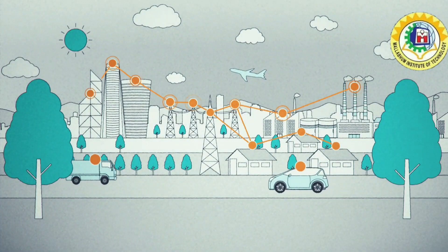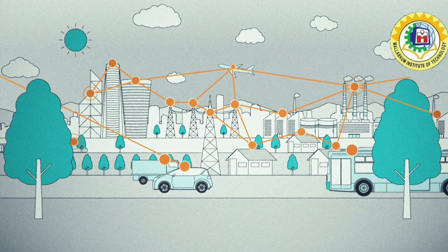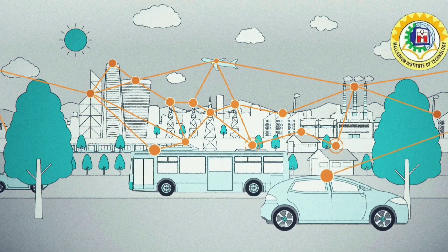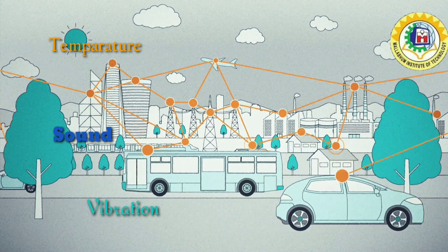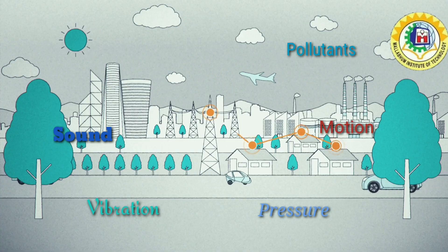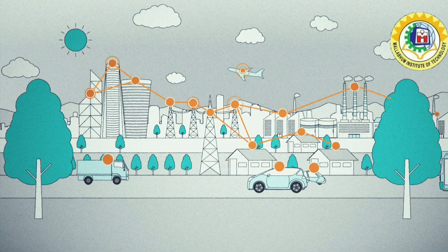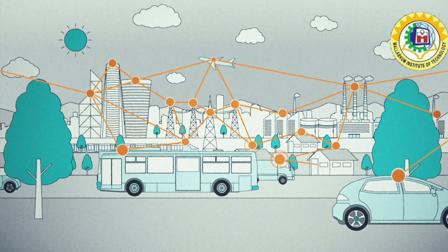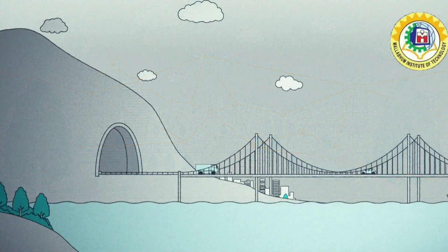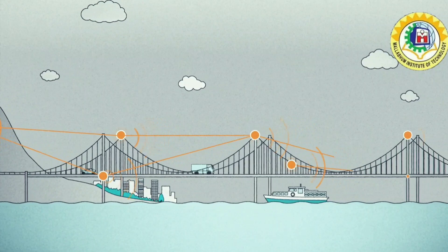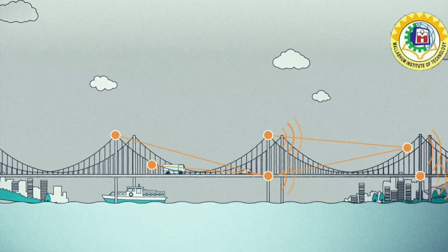It can be defined as a self-configured and infrastructure-less wireless network to monitor physical or environmental conditions such as temperature, sound, vibration, pressure, motion or pollutants, and to cooperatively pass their data through the network to a main location or sink where the data can be observed and analyzed. Typically, a wireless sensor network contains sensor nodes.